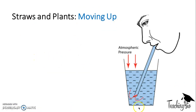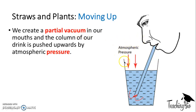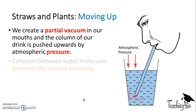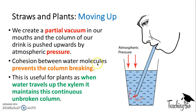Think about straws and plants — this idea of water moving up against pressure. When we suck on a straw we create a partial vacuum in our mouths, and the column here is an unbroken, continuous water column. The water in here is pushed upwards by atmospheric pressure, and it's the cohesion between the water molecules that prevents the column from breaking. This means that the water can travel up to our mouths against gravity because of the atmospheric pressure. This is useful for plants as when water travels up the xylem it maintains this continuous unbroken column.